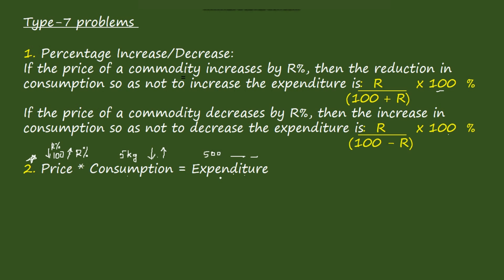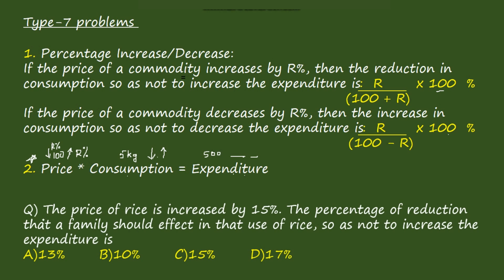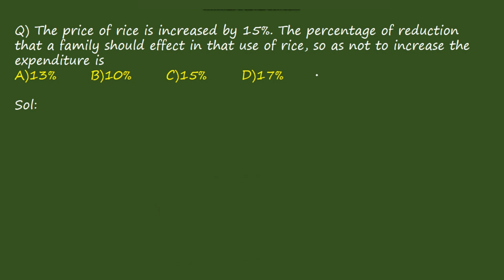This is the basic concept you have to remember. Now we'll solve a few problems. First question: the price of rice is increased by 15 percent. What is the percentage of reduction that a family should afford in the use of rice so as not to increase the expenditure?